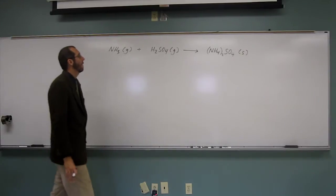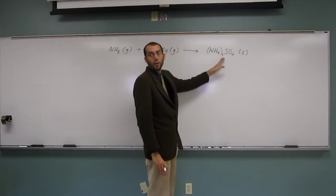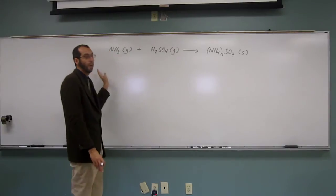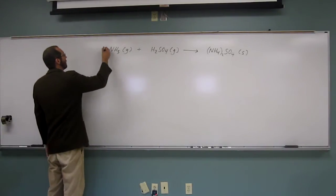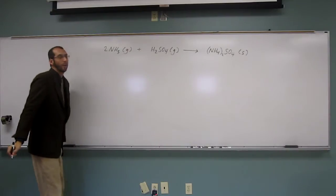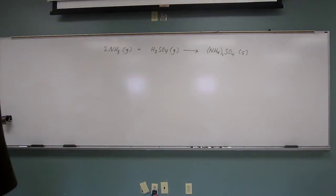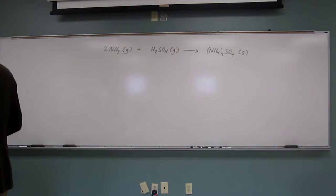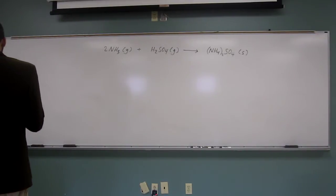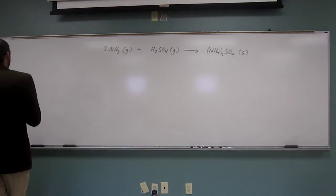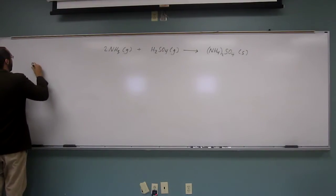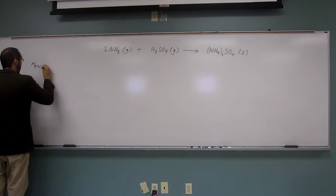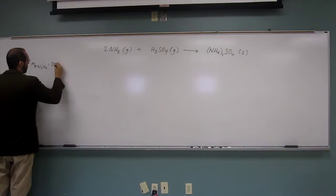But if you look at that, how many nitrogens do we have here? Two. On this side, we only have one. So in order to balance this equation, we're going to have to adjust the coefficients. The second part of this problem says: determine the starting mass in grams of each reactant if 20 grams of ammonium sulfate is produced.